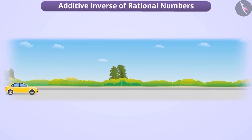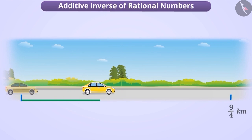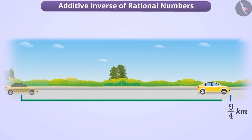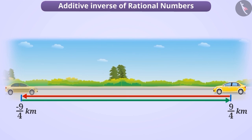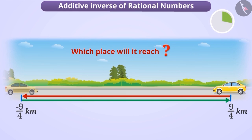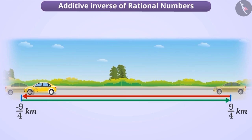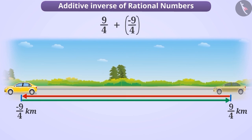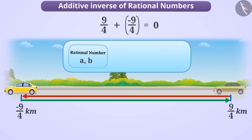Suppose a car starts from its starting point and runs a distance of 9 by 4 km to the right and then moves the same distance to the left — then it will reach which place? The car will again reach its starting point. That is, 9 by 4 plus minus 9 by 4 is equal to 0. Thus, if the sum of any two rational numbers is 0, they are called the additive inverse of each other.